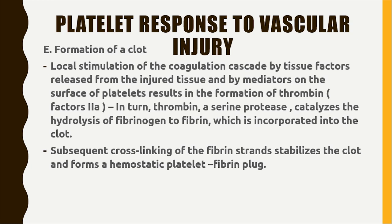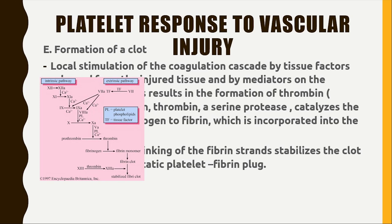Local stimulation of the coagulation cascade by tissue factor — present in injured tissue and expressed on the surface of platelets — leads to formation of thrombin, which activates factor IIa. Thrombin, a coagulation protease, catalyzes the conversion of fibrinogen to fibrin, forming the non-covalent fibrin network of the clot. Subsequent cross-linking of the fibrin strands stabilizes the clot and forms a hemostatic fibrin plug.